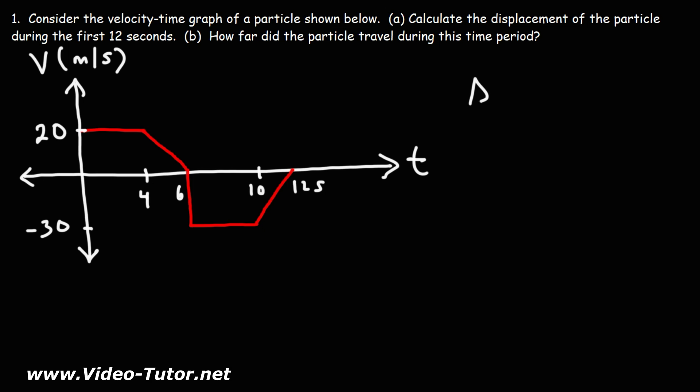Here's what you need to know. The displacement, or the change in position, is equal to the area under the curve. Let's say we have a rectangle. The area is equal to the length times the width.